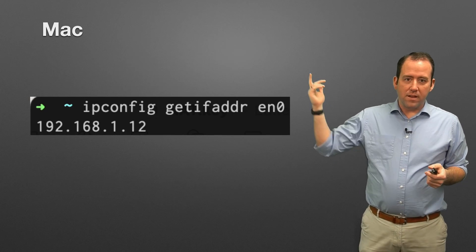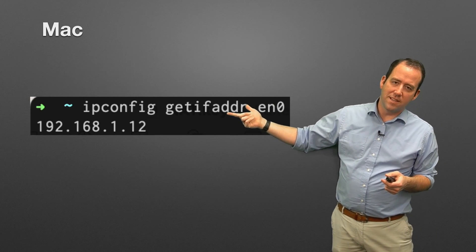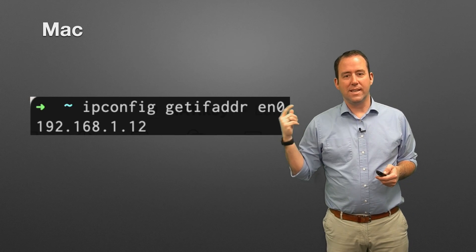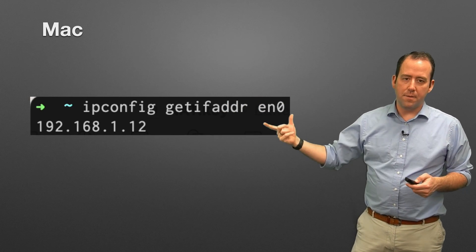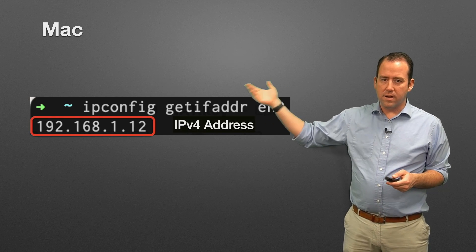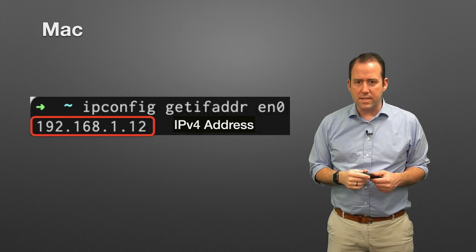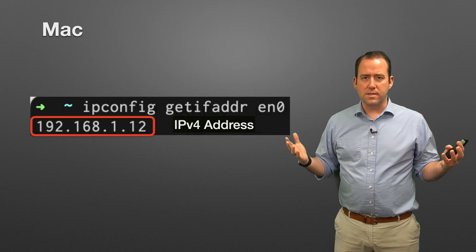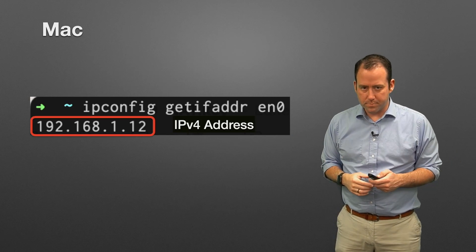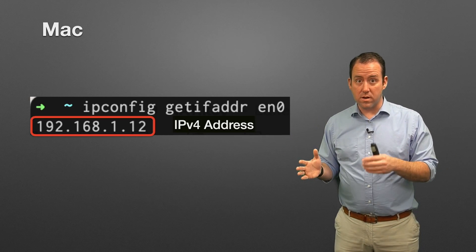On a Mac, if you're on wireless, use the command: ipconfig getifaddr en0 - that's 'get interface address' for interface EN0. It gives you back just the IP address. In this case it shows 192.168.1.12. That is the private address on my Mac laptop.